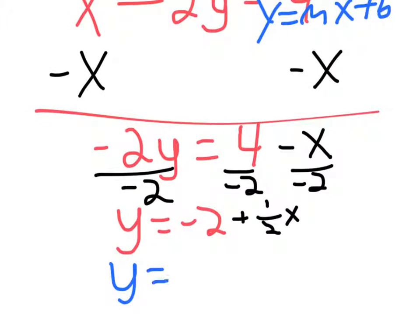Or, you can rewrite it in slope intercept form. 1 half x subtracted by 2. It's perfectly fine to rewrite just as long as you keep the sign that's in front of your term there. Like this is a positive 1 half x, so I made sure it was a positive 1 half.